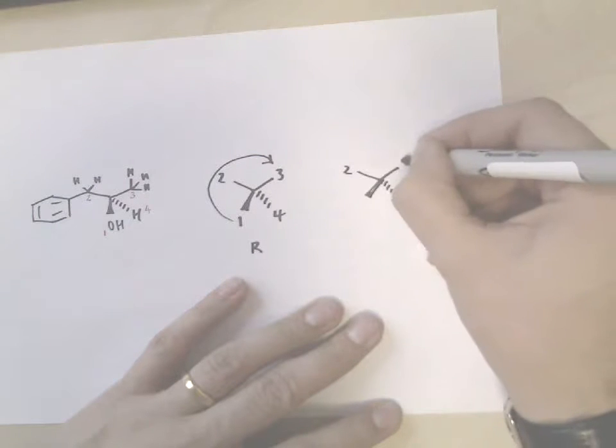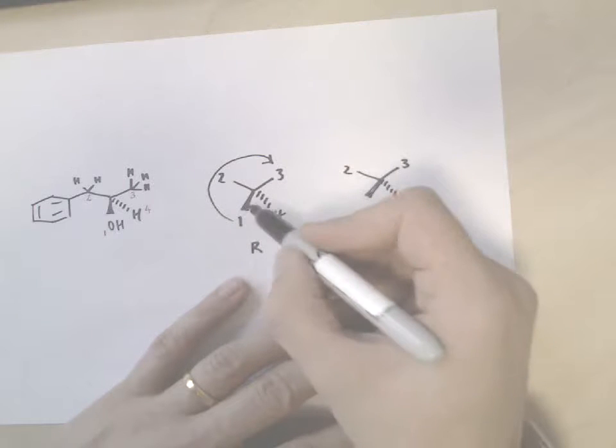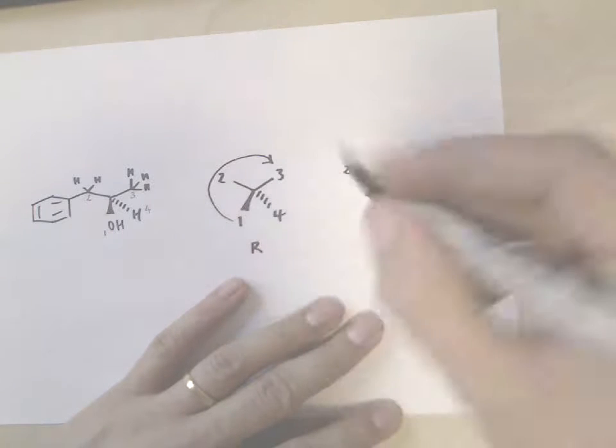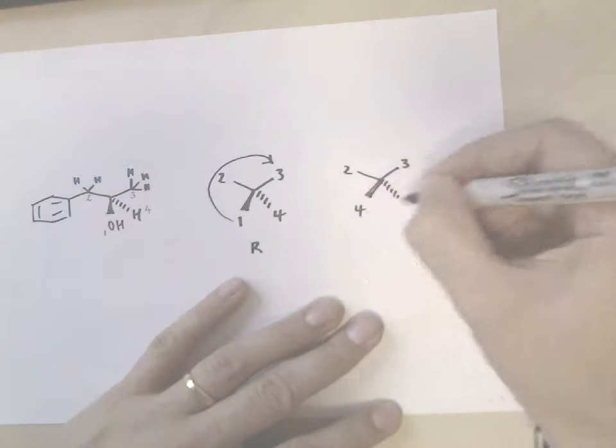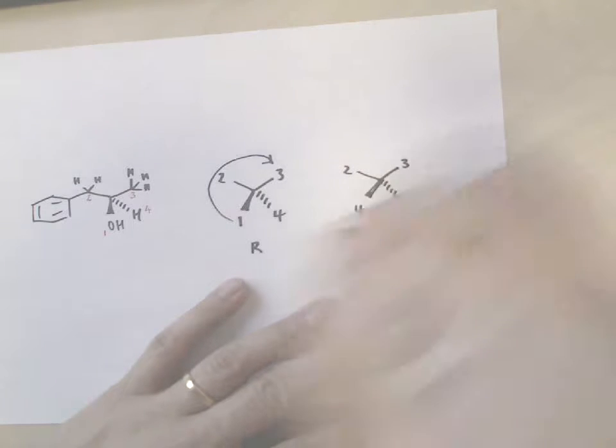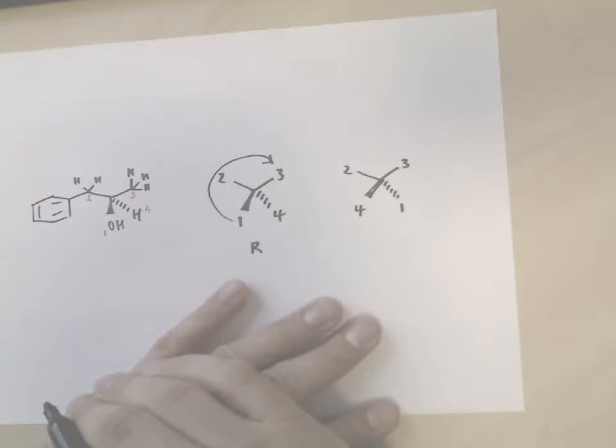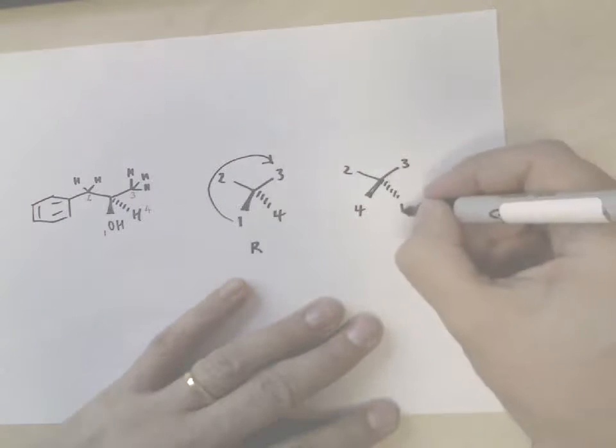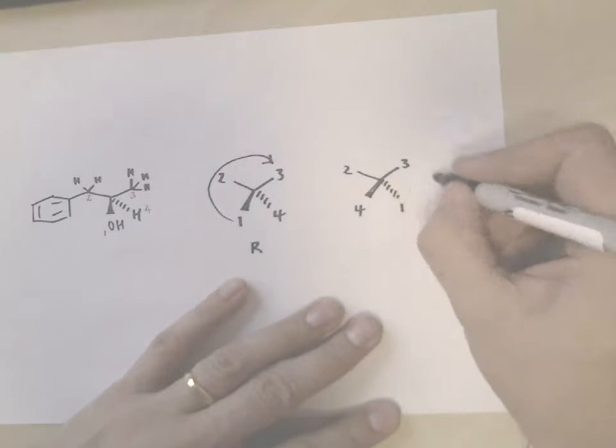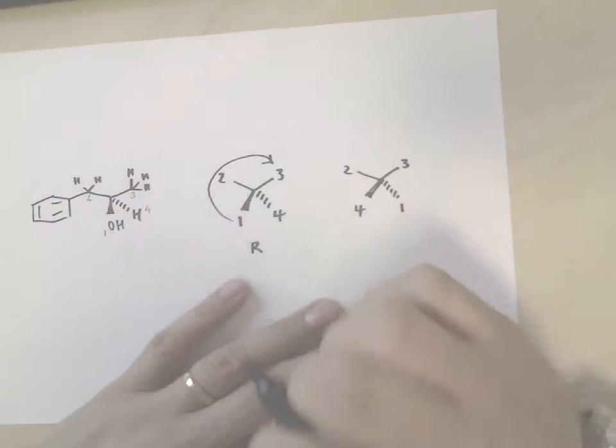This is still two, this is still three, but if we break these two bonds and swap them over so that four is coming forward and one is going back, then yes, it's still going round clockwise, but we're looking at it from the wrong direction.